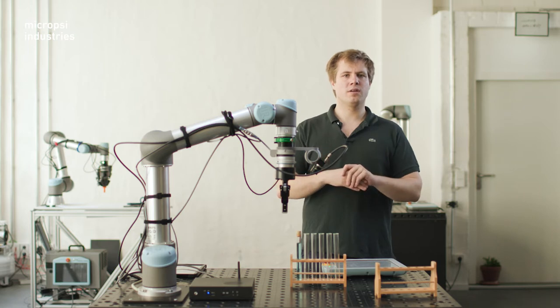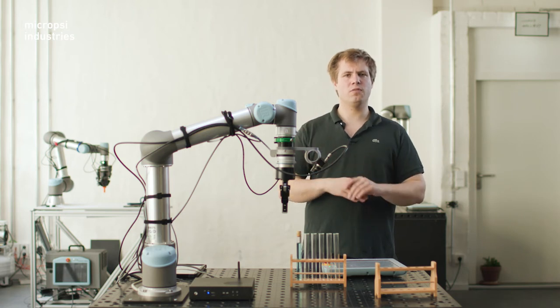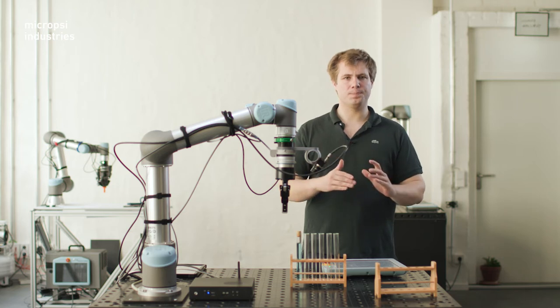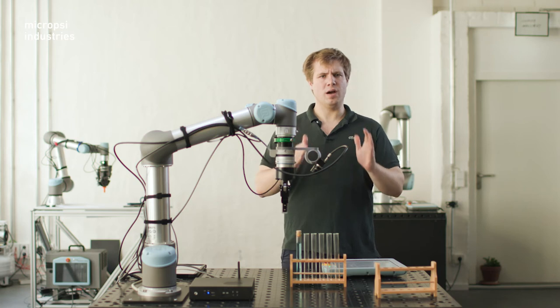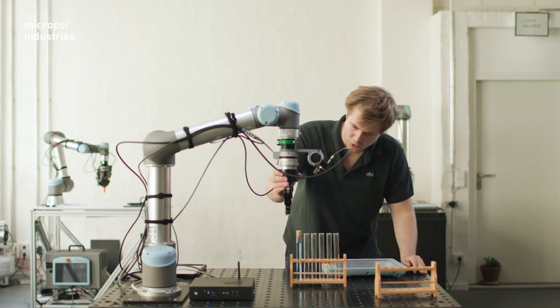If a human currently does the task, be it an assembly task or quality inspection task, you want to observe how they do it. This person has naturally fine-tuned their movements. Like that person, the robot should use the shortest path with no extra movements. Let me show you here.